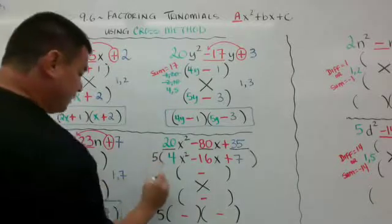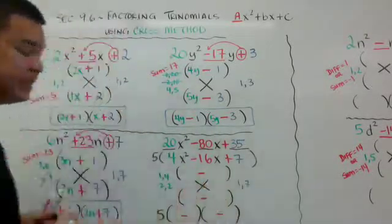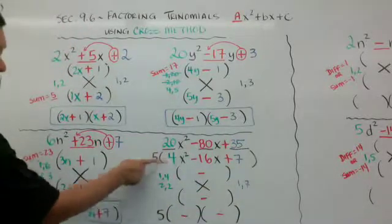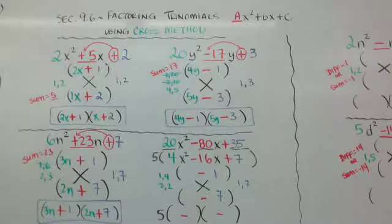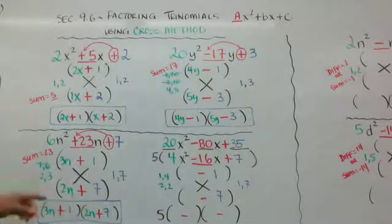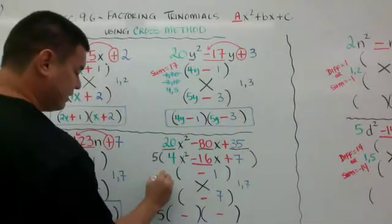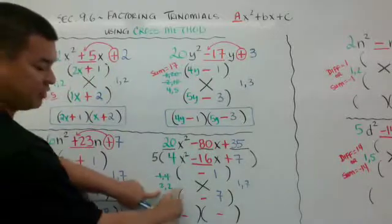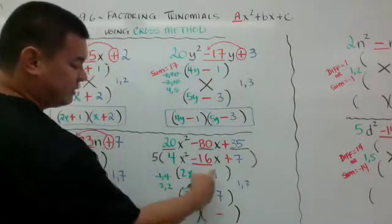I list my factors of 4: 1 and 4, and 2 and 2. And my factors of 7: 1 and 7. It's much easier when you factor it down — instead of all the factors of 35 I only have factors of 7, and instead of all the factors of 20 I only have factors of 4. Because 7 is prime, I put the 7 and the 1 and figure out what goes with it. I need a sum of 16. If I start here I get 1 plus 28, that's 29. Or 7 plus 4, which is 11 — that doesn't work. So then I get 2 plus 14, and there's my 16.